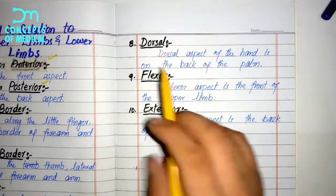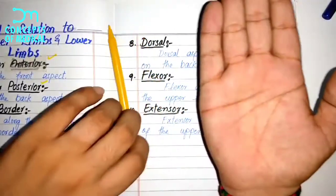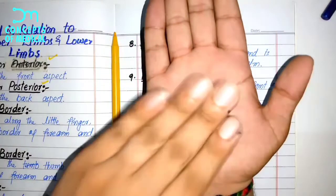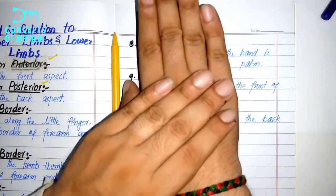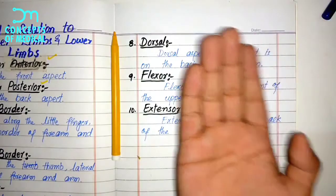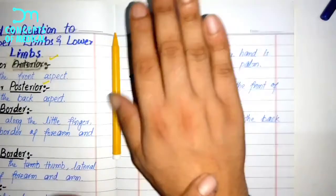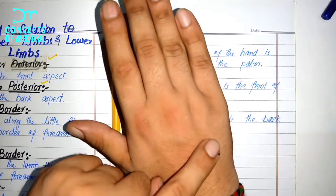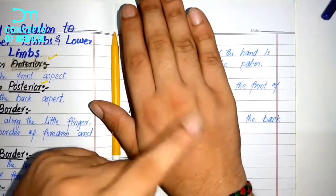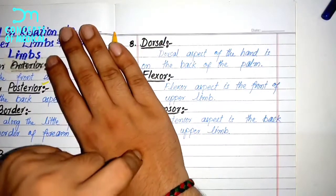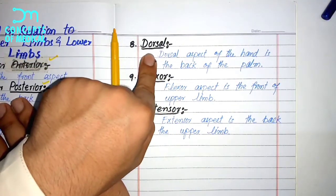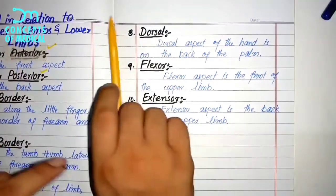The dorsal aspect of the hand is on the back of the palm. Both palmar and dorsal terms are used specifically for the hand. The palmar side is the front and the dorsal side is the back. Any muscles, veins, or nerves present at the back of the hand are described using the dorsal term.